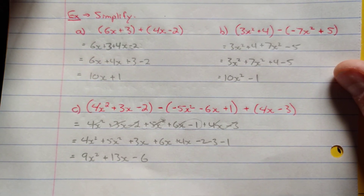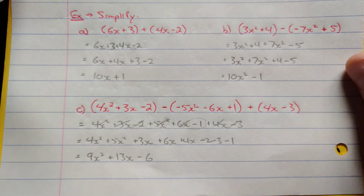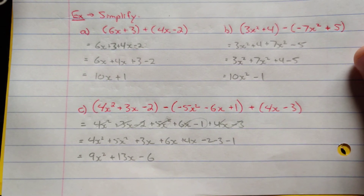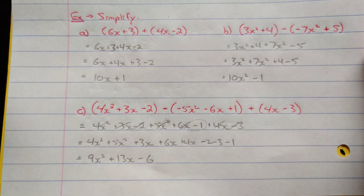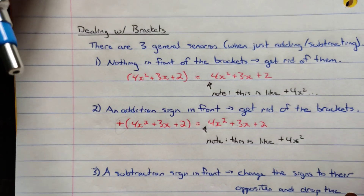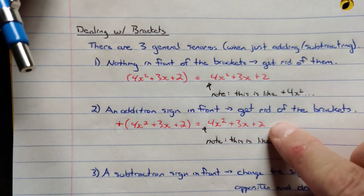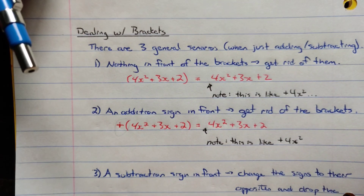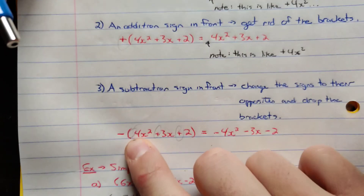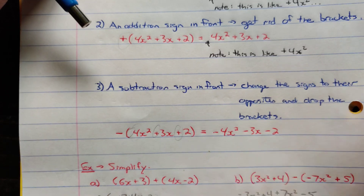To summarize: like terms need to have the same variables and exponents. When adding or subtracting, just combine the like terms. With brackets, drop them if there's nothing or a plus sign in front. If there's a negative sign in front, change every term inside to its opposite sign, then drop the brackets.